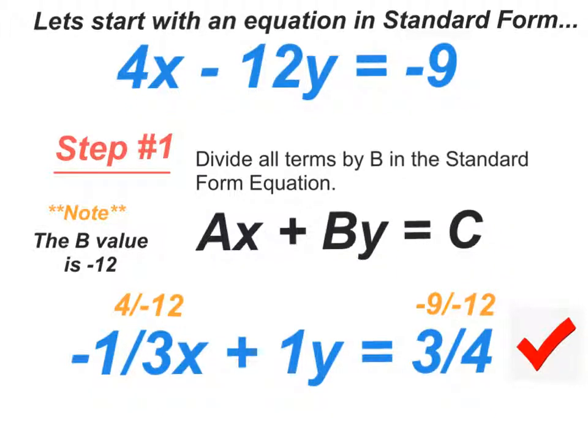4x divided by negative 12 gives you negative 1 third x. Negative 12y divided by negative 12 gives you positive 1y. And over here, a negative 9 divided by a negative 12 is going to give us positive 3 fourths. That's step number 1.